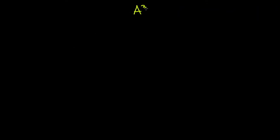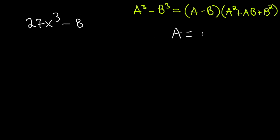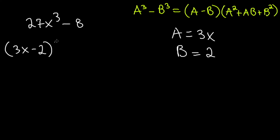Here's another special case you won't see as often, but it's important to include: the difference of cubes. a cubed minus b cubed equals (a minus b)(a squared plus ab plus b squared). For example, 27x cubed minus 8: a is 3x and b is 2. So the solution is (3x minus 2)(9x squared plus 6x plus 4), where 9x squared is (3x) squared, 6x is a times b, and 4 is b squared.